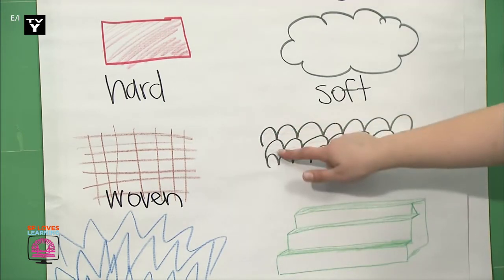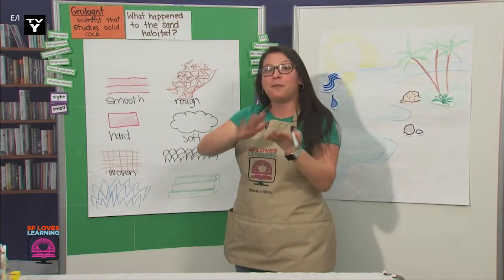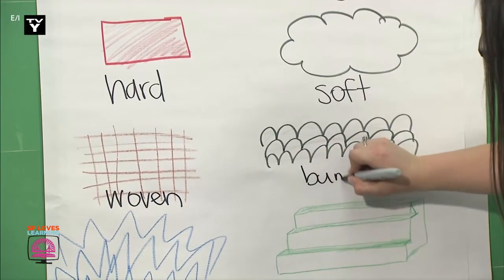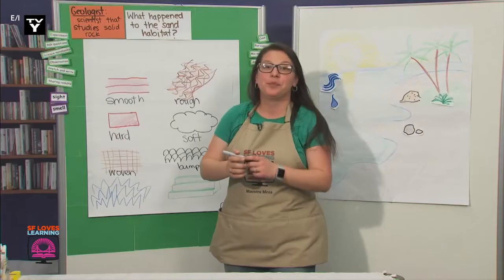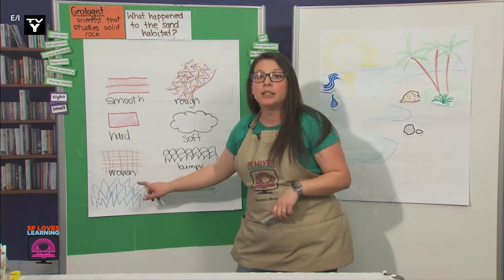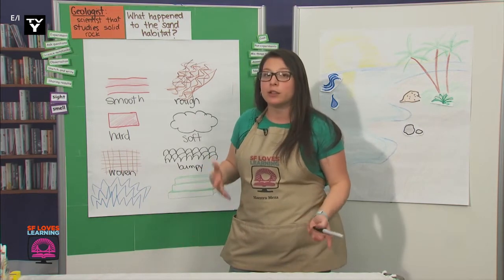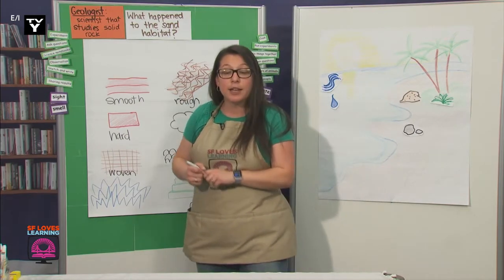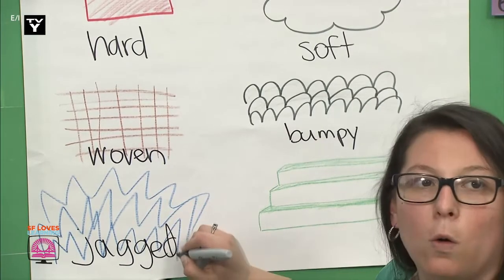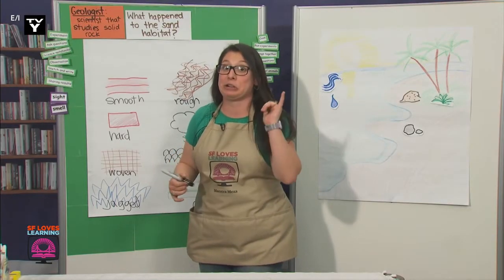Next, we have bumpy — like a bumpy ride. So that's a texture that might look and feel like bumps. This is the texture I was saying earlier: jagged. Some examples of things that are jagged are broken glass and rocks on a cliffside. Can you think of anything with a jagged texture? A geologist said that shark's teeth are jagged — I agree.